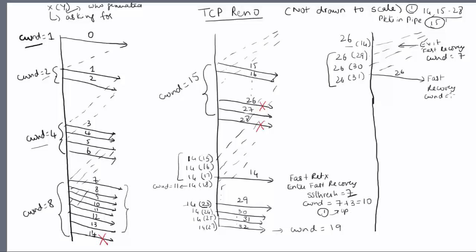At this point ssthresh is set equal to 3 (which is 7 over 2) and CWND is set equal to 3 plus 3, which is 6. As far as the sender is concerned there are packets 26 through 32 outstanding. Another duplicate ACK arrives from packet 32, making CWND equal to 7, but there are already 7 outstanding packets so you cannot send any additional packets.